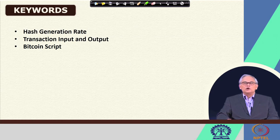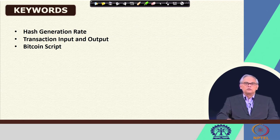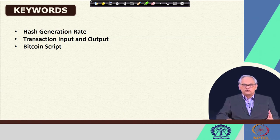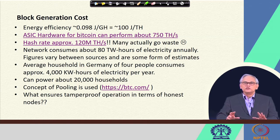The keywords for today's lecture are: hash generation rate, inputs and outputs of transactions, and bitcoin scripts. As we include several transactions in a block in Bitcoin, we need to understand what serves as the input for those transactions and what the outputs would be.